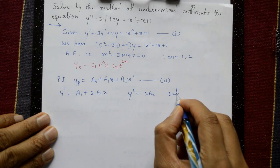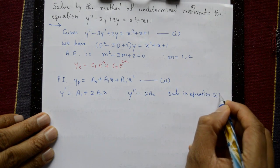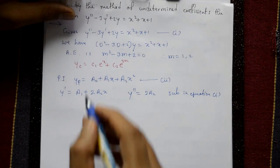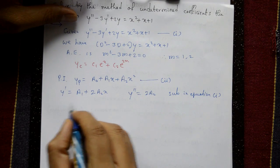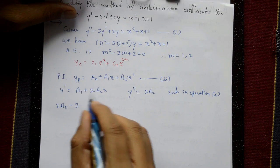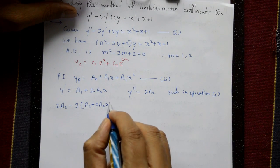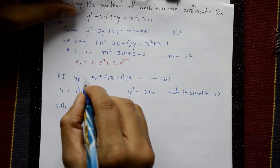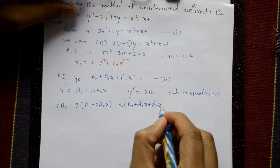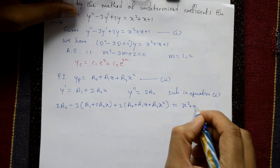Now substitute y, y', and y'' into equation number one. We get: 2a₂ - 3(a₁ + 2a₂x) + 2(a₀ + a₁x + a₂x²) = x² + x + 1.